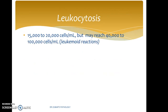Coming to leukocytosis: the normal white blood cell count is 4,000 to 11,000. When counts rise above 11,000 — reaching 15,000, 20,000, or even 40,000 to 100,000 — they are called a leukemoid reaction. Leukemoid reactions resemble leukemia but blasts are absent; instead there is an increase in immature precursors.